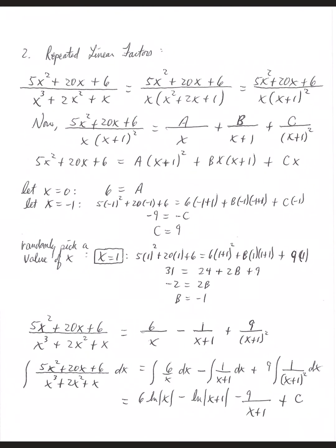Multiply both sides by the least common denominator, x times x plus 1 quantity squared. This gives: 5x squared plus 20x plus 6 equals A times x plus 1 squared, plus B times x times x plus 1, plus C times x. The A fraction is missing two x plus 1 factors, the B fraction already has one x plus 1 so it only needs one more, and the C fraction is missing a single x.